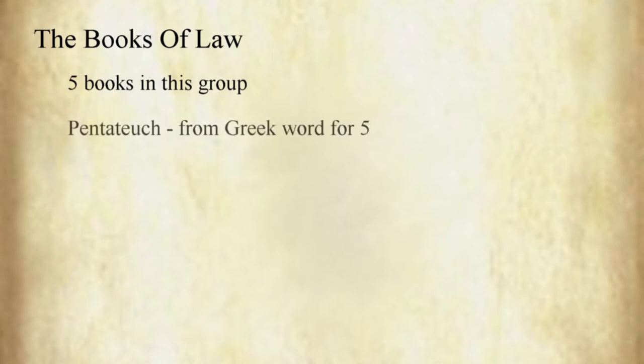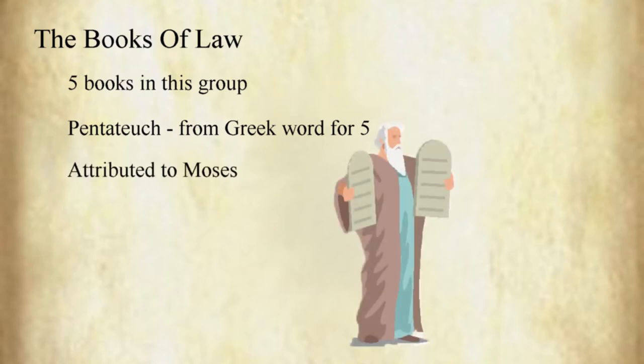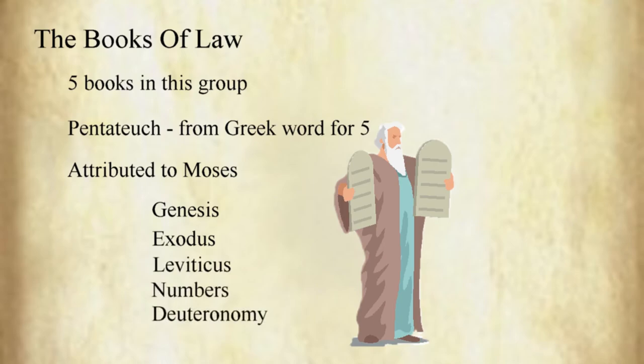Let's take a closer look at the groups. The books of law: there are five books in this group, also referred to as the Pentateuch, a word derived from the Greek word for five. These are attributed to Moses as the originator, and so are also known as the books of Moses. In order, these are Genesis, Exodus, Leviticus, Numbers, and Deuteronomy.